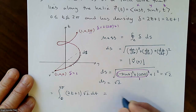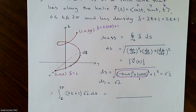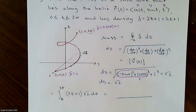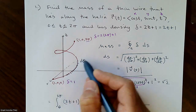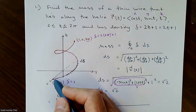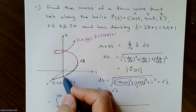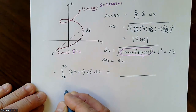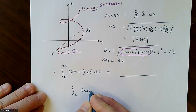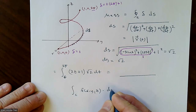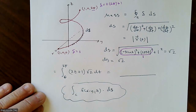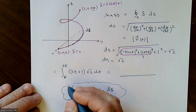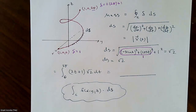This is an easy integral — you can pull out the √2. Along this wire, z = t, so 2z + 1 becomes 2t + 1. We integrate (2t + 1)·√2 dt from 0 to 2π. The point is that we use a line integral to calculate mass — we add up all the density values at every tiny point along this curve. In general, a line integral integrates some function of x, y, possibly z over little tiny chunks of the curve, multiplied by ds.